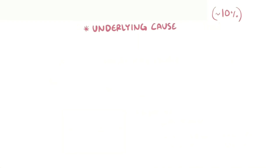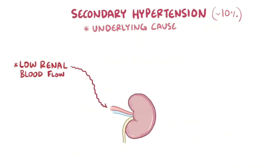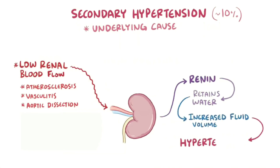About 10 percent of the time there is a specific identifiable underlying condition causing the hypertension — this is called secondary hypertension. For example, anything that limits blood flow to the kidneys can cause hypertension, such as atherosclerosis, vasculitis, or aortic dissection. The kidneys play a crucial role in blood pressure regulation: when not enough blood flows to the kidney, it secretes renin, which ultimately helps the kidneys retain more water, increasing blood volume and raising pressure.